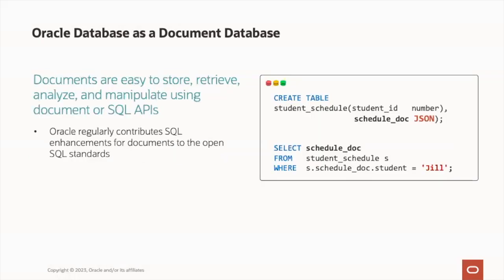JSON documents can be stored in an Oracle table using the native or binary JSON data type — as we see here for the student doc column of the student schedule table. The JSON data type is a first-class database object, meaning that it is supported with all Oracle database features, tools, and utilities. It's also possible to index as well as query JSON documents using the regular dot notation syntax. Relational data can be returned or passed as JSON documents using the SQL JSON function, and JSON data can be transposed to appear as tables and columns using JSON data guide.